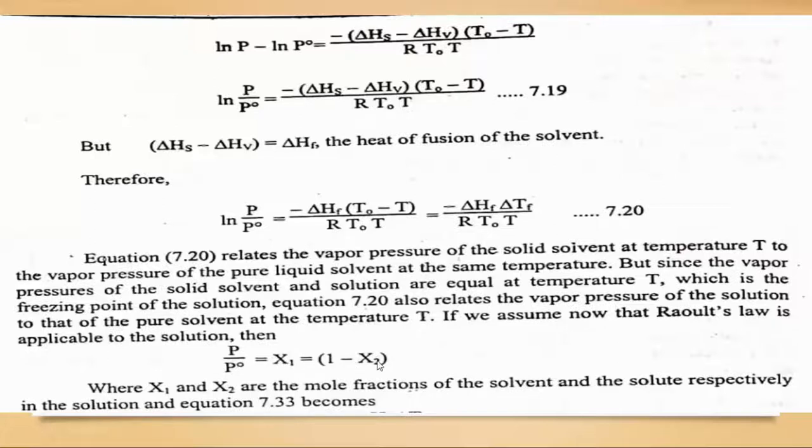x_1 equals 1 minus x_2. How did this happen? x_1 + x_2 = 1, so x_1 equals 1 minus x_2. So you can write it like this.